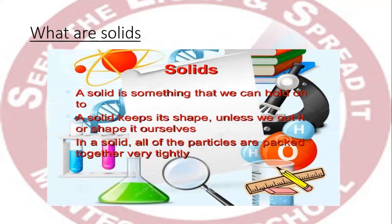A solid is something that we can hold on to. A solid keeps its shape unless we cut it or shape it ourselves. In a solid, all the particles are packed together very tightly. Solids have a definite shape that doesn't change when you move it or put it in a container. They also have consistent mass and volume, because the atoms of a solid object are packed together so they do not move around.